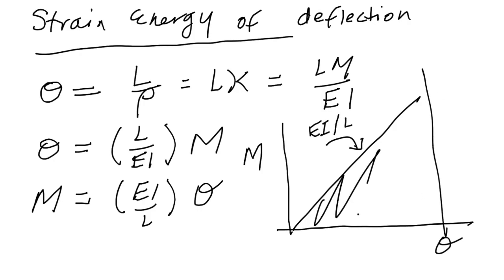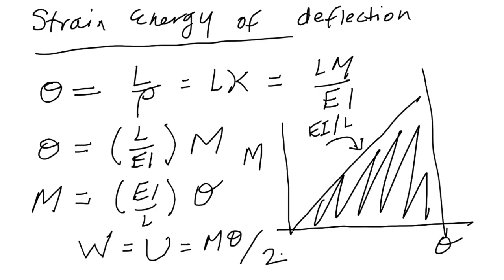If we want the strain energy, it's going to be the area underneath that curve. So the external work has to be equal to the internal work or the strain energy, and that's going to be equal to M theta over two. So there's our first important equation. That's the basic equation where we're saying the internal and external energy have to be equal.